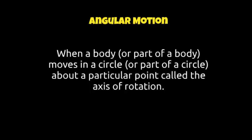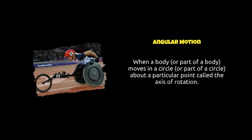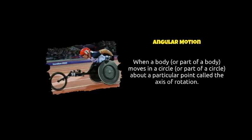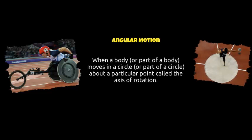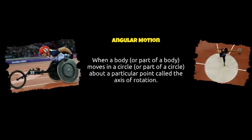The second aspect you need to know about is angular motion. This is where a body — a person, object, or part of a body such as an arm or limb — moves in a circle about an axis of rotation. A good example is a wheel: in wheelchair racing, the wheel has a centre point and rotates around that central axis. Another example is a discus thrower, who, viewed from a bird's eye view, rotates around a central point before releasing the discus.